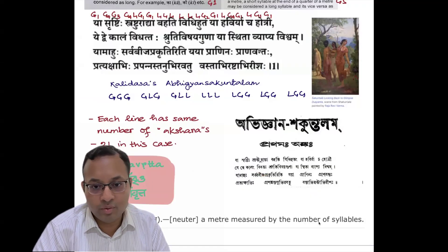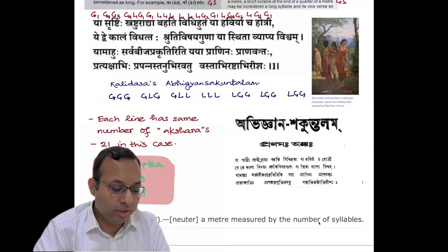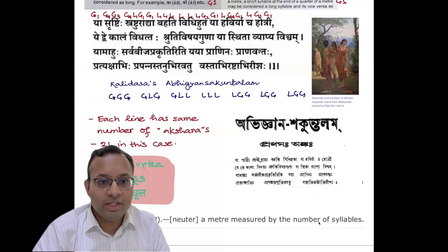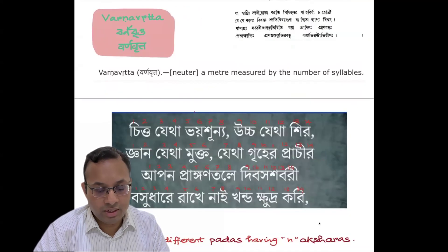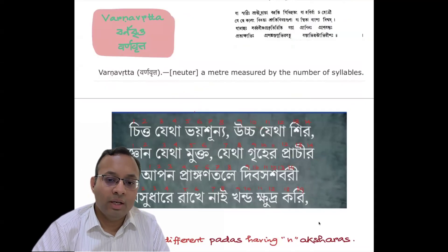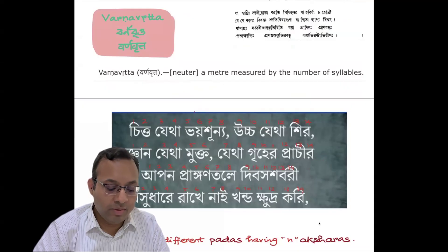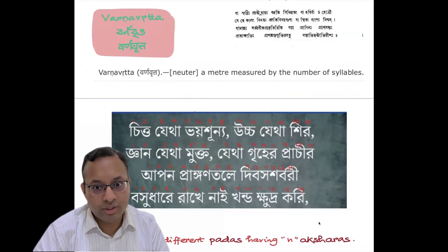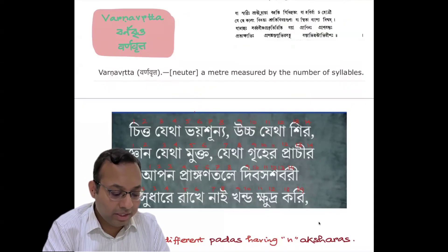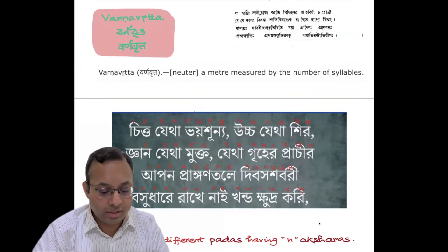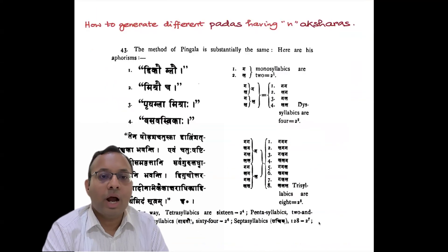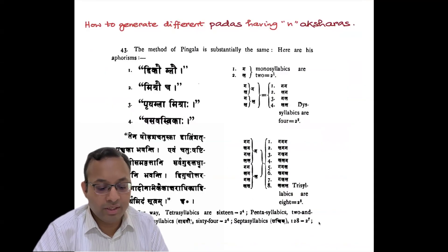In this case, each line has the same number of Akshars — 21 in this case — and we call this Varna Vrtta Chanda. In Varna Vrtta, every line has the same number of syllables. Here's a Bengali example by Rabindranath Tagore: 'Chitto jethay bhayshunno, uccho jethay shir, gyan jethay mukto, jethay grihero prachir.' Each line has 14 Akshars. So one can ask: how to generate different padas using N Akshars? This was Pingala's algorithm.